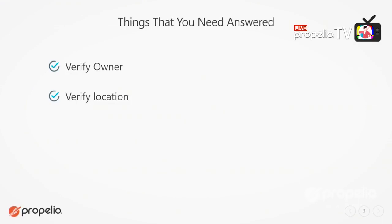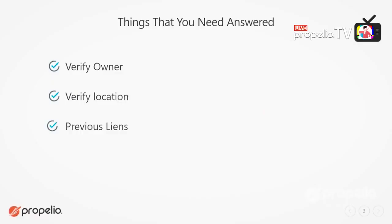I also need to verify the location. In Texas the install location must match the location on title, otherwise they may require an inspection. In Texas, 98-plus percent of all mobile home moves are inspected, so if they see it's been moved and not inspected you may get flagged for an inspection. I also want to see if there are any previous liens on title - tax liens or purchase liens. I want to verify that taxes are current, and I want to verify that lot rent is current.